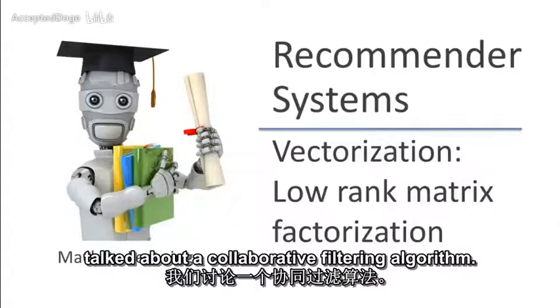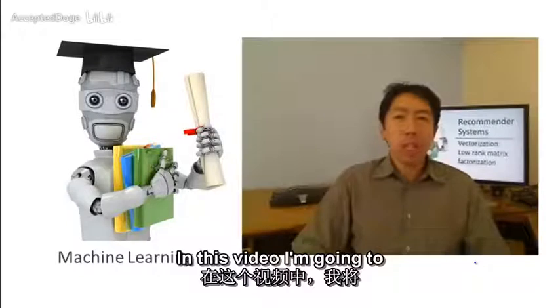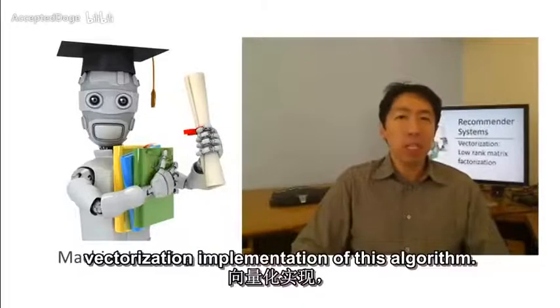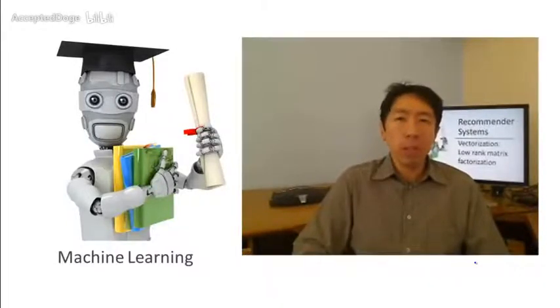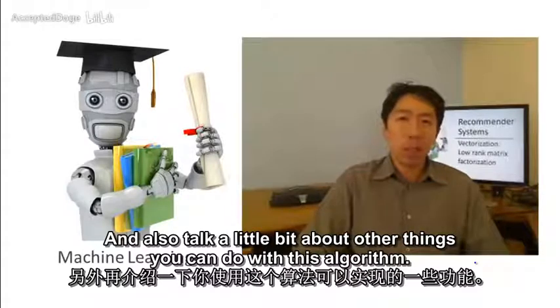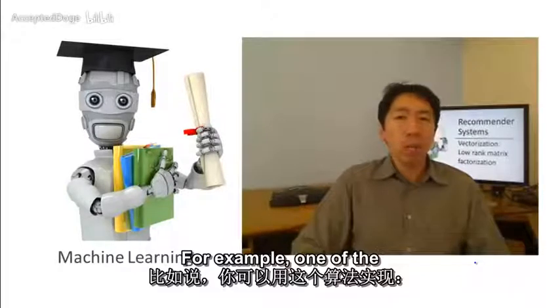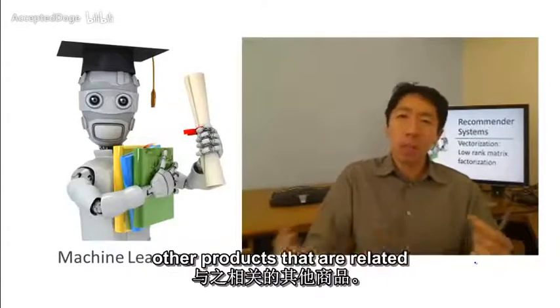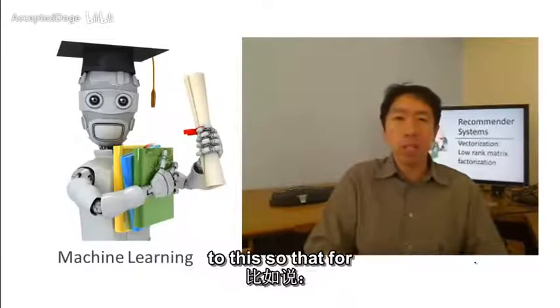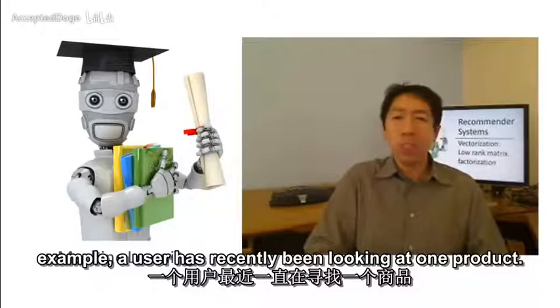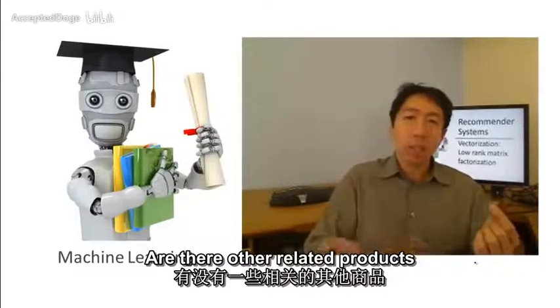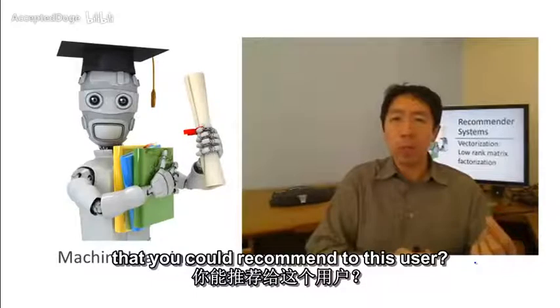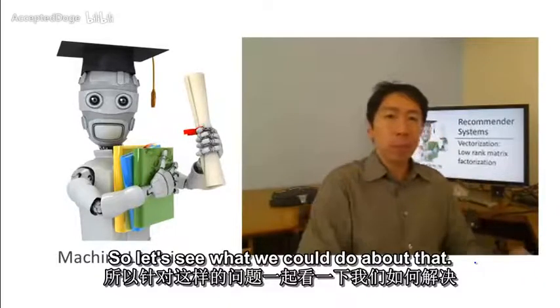In the last few videos, we talked about a collaborative filtering algorithm. In this video, I want to say a little bit about the vectorization implementation of this algorithm and also talk about other things you can do with this algorithm. For example, one of the things you can do is given one product, can you find other products that are related to this? So that if a user has recently been looking at one product, are there other related products that you could recommend to this user? So let's see what we can do about that.